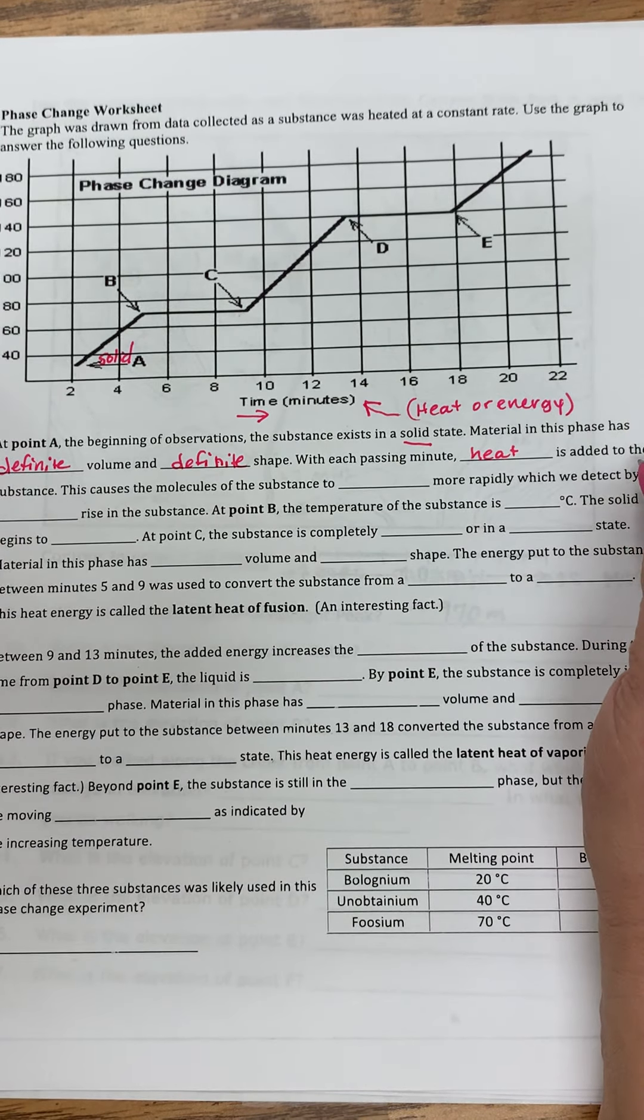At point B, the temperature of the substance is, well, if you look at point B and you draw a little line straight across, you see that it's between 60 and 80. Well, halfway between 60 and 80 is going to be 70. So at point B, the temperature is 70 degrees. The solid begins to melt at this point. So this would be considered melting point.